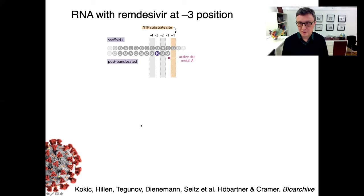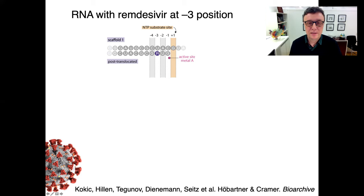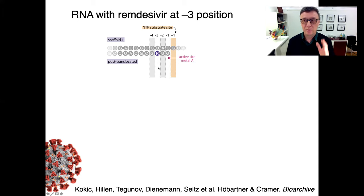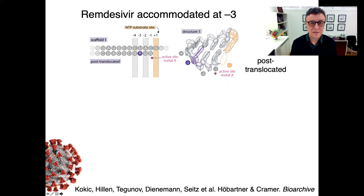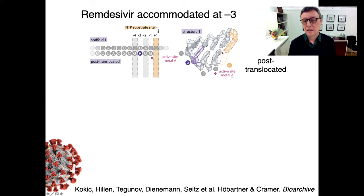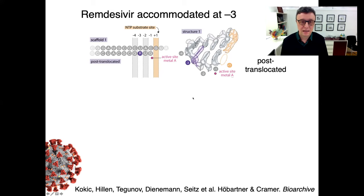In order to study this structurally, we used those RNAs from the Hoepartner lab and incorporated a remdesivir residue at position minus three of the product RNA — so position minus one, minus two, minus three. We chose minus three because we wanted to see the state of the enzyme just before the stalling occurs. We solved the structure of this RNA-protein complex and observed that we have an active form of the complex: remdesivir really occupies the minus three position as designed, and we see an empty active site — an empty binding site for the next nucleoside triphosphate substrate. So this is an active state of the enzyme; we can move forward from here and incorporate one more nucleotide, exactly as was observed biochemically.